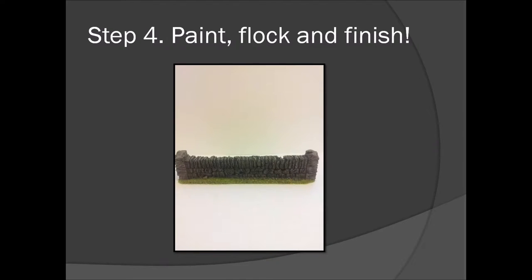Step four: paint, flock and finish. So after it's painted it might look something like this. I painted mine with a dark gray mixed with a little brown, and then gray mixed with a little brown. And then I highlighted it with a white or bone color.